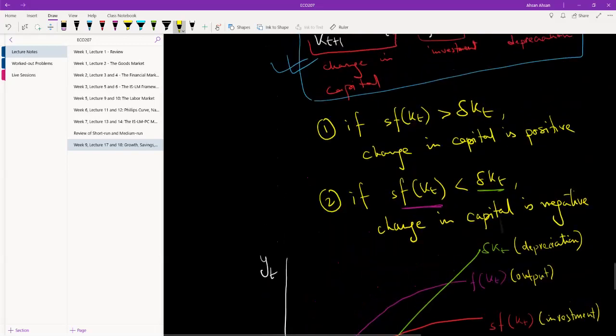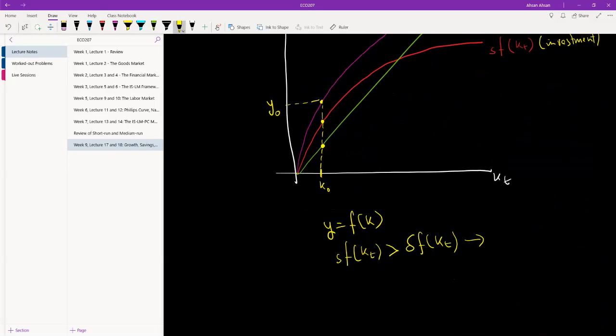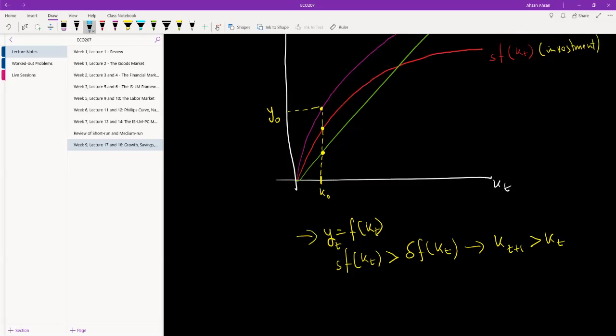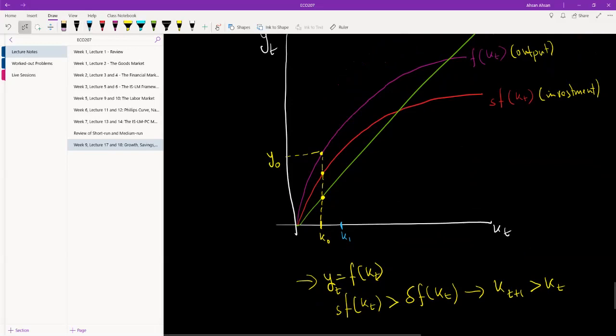If we have this scenario, we've already established that change in capital will be positive. This means that, let me put the time subscript here and here as well, what we know is that capital in the next period will be higher than capital we had in this period. Because how much we have invested has been higher than the level of depreciation. As a result, capital stock has increased. When capital stock increases, this equation tells us that output increases. So let's take a look at that.